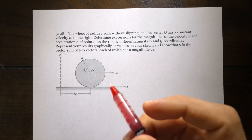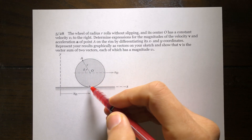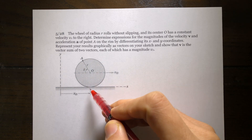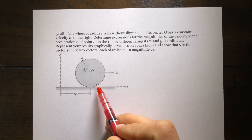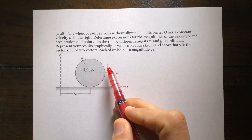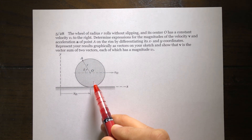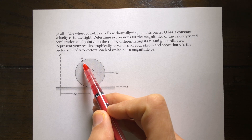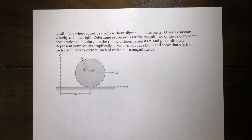This is another important example for parametric motion. Whenever we have a disc rotating on the ground without any slip, the disc rotates with angular velocity omega and angular acceleration alpha, with no slip between the disc and the ground. The question is: what is the velocity of point A, an arbitrary point on the circumference of this disc, and also its acceleration?